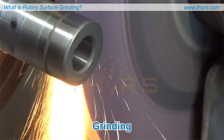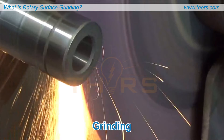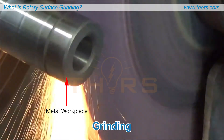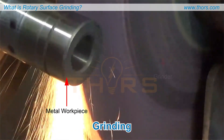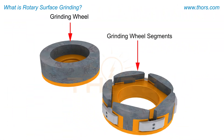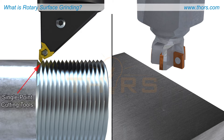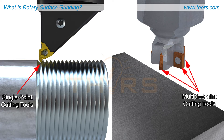Grinding is the process of cutting, sizing, or otherwise removing material from a metal workpiece using tools and machines known as grinders. Grinding wheels or grinding wheel segments are the cutting tools that engage the workpiece at many contact points. In contrast to this, there are single point cutting tools such as turning tools and multiple point cutting tools such as shell mills.